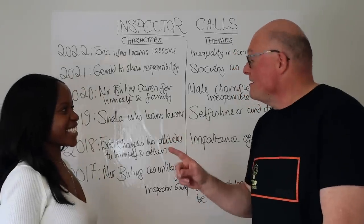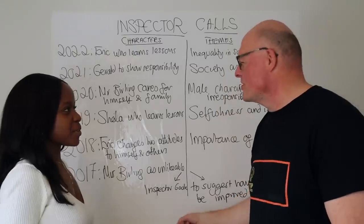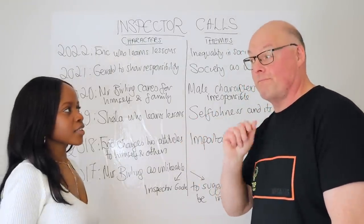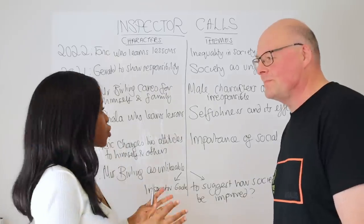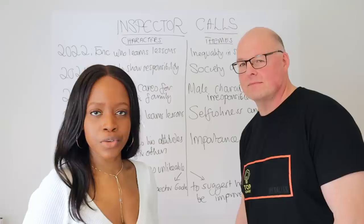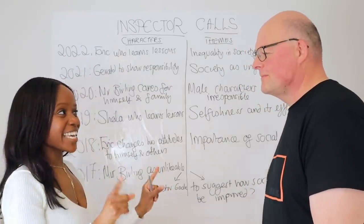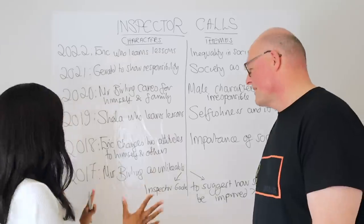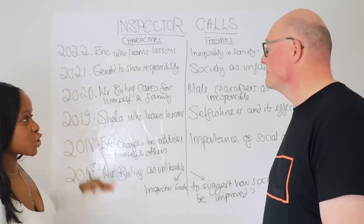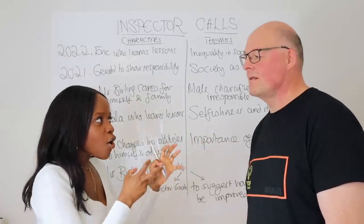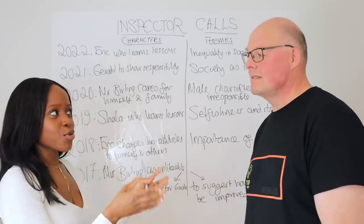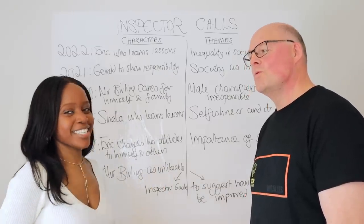Hello Inspector First Rate, you've been checking out the Inspector Calls questions. What clues have you picked up about what's coming up this year? So actually when it comes to these questions, AQA has left lots of clues that we can use to predict what's going to come up in this year's exams. Looking at 2017, 18, 19, 20, 21 and 22, there's kind of a series of ideas that might lead us to identify the real crime — which is this exam that's taking place this year.